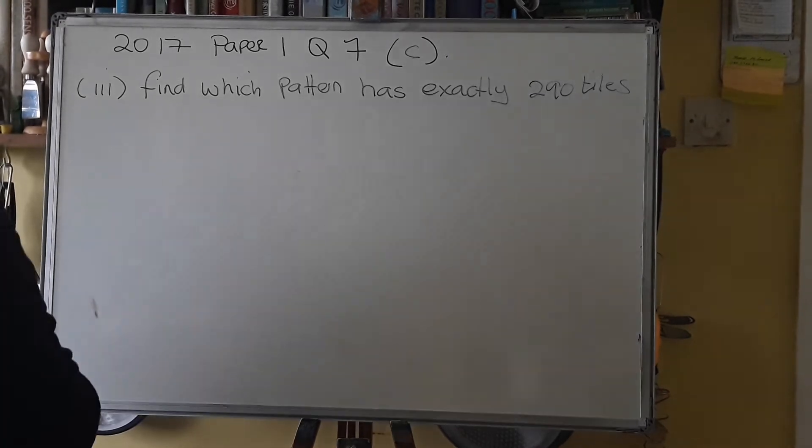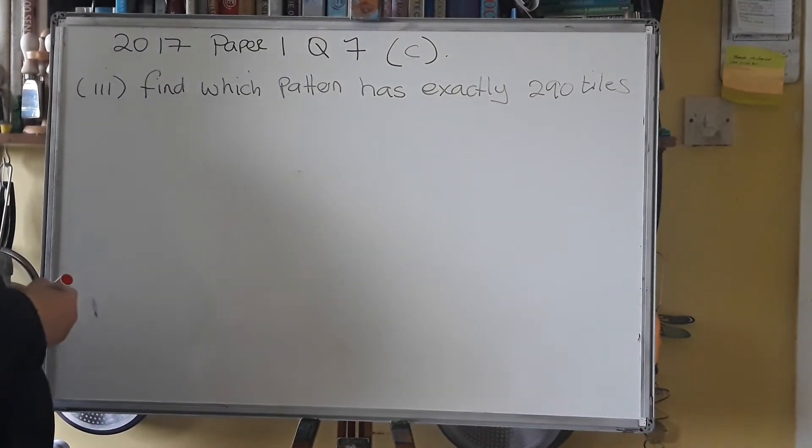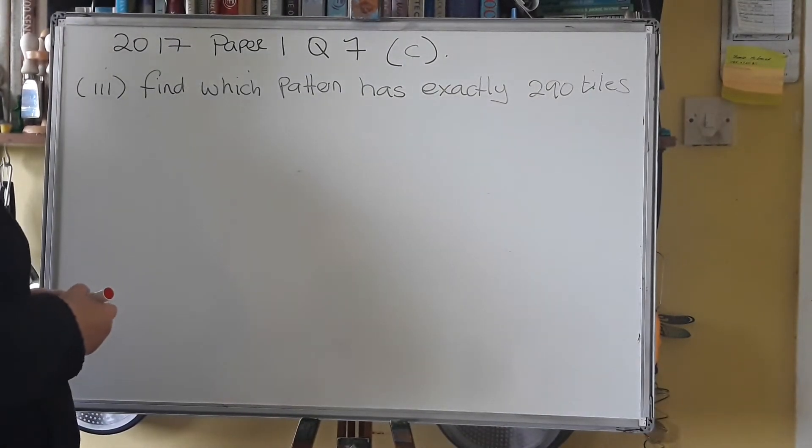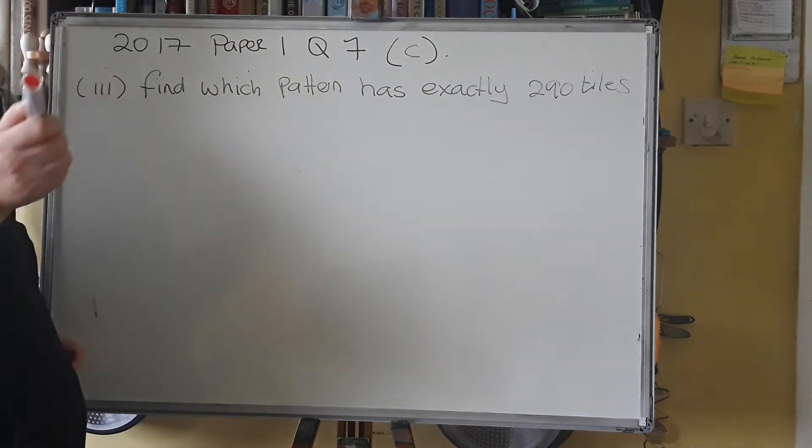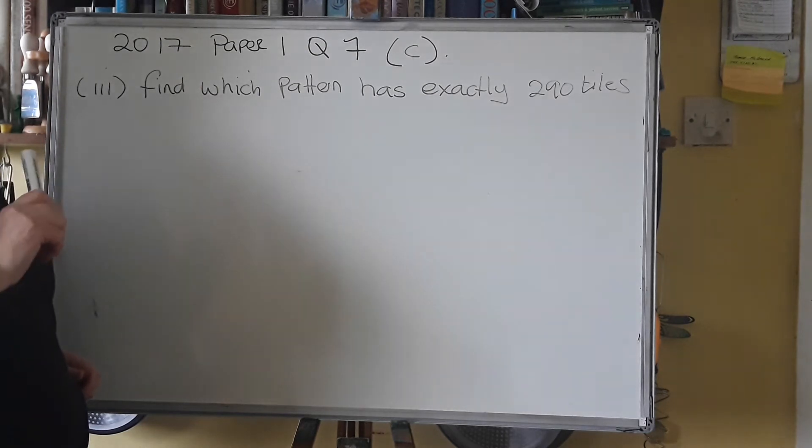So see part 3. Find which pattern has exactly 290 tiles. So for this one, again pause, have a go, and come back for this one part.